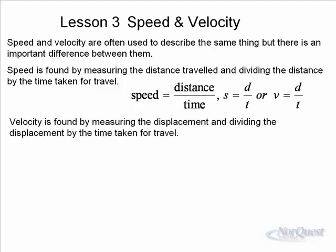Velocity is found by measuring the displacement and dividing the displacement by the time taken for travel. So it's essentially the same formula, only instead of the d standing for distance, it stands for displacement.